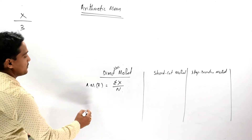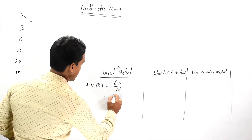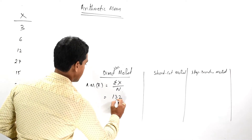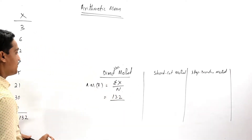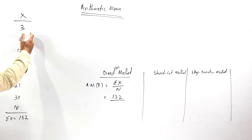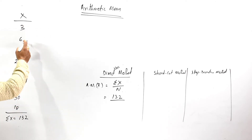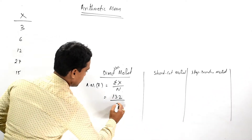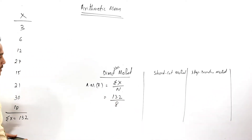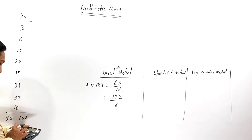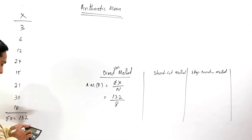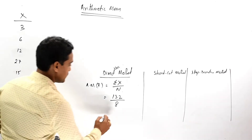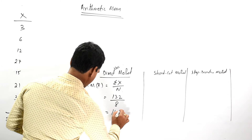So our arithmetic mean equals summation of x, that is 132, divided by n — the number of items, which is 8. So in the given series, n is 8.